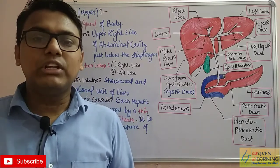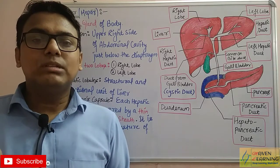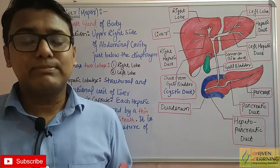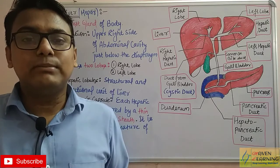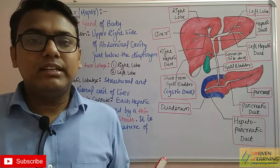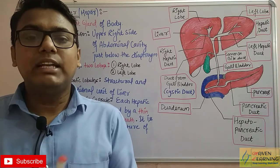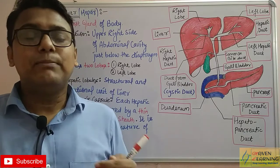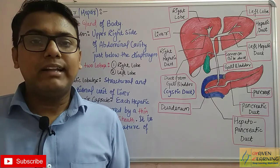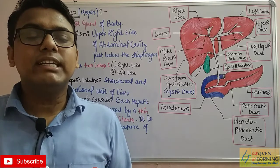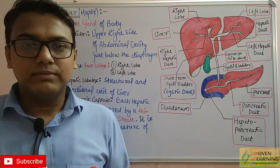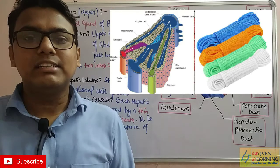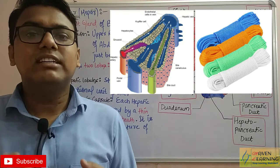Inside the hepatic lobules, many cells are present. Since they are in the liver, we use the word 'hepatic' — so these cells are called hepatic cells. These hepatic cells are arranged in the form of cords, just like a rope. The function of hepatic cells is to secrete bile, which is secreted in the liver.